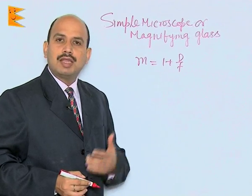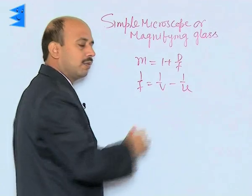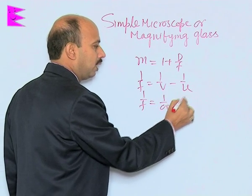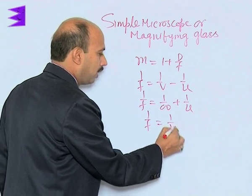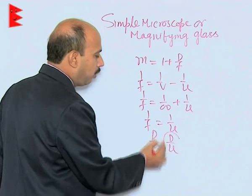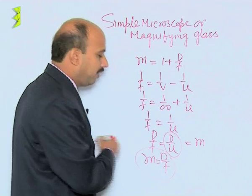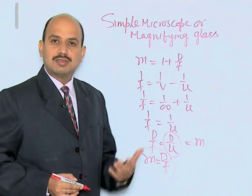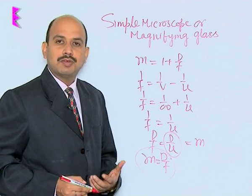We can also calculate when the final image is at infinity. Using the lens formula 1/f = 1/v - 1/u, with the final image at infinity: 1/f = 1/infinity + 1/u. Using sign convention with u negative: 1/f = 1/u, so multiplying by D on both sides, D/f = D/u, and since D/u = m, we get m = D/f when the final image is at infinity. When the final image is at the least distance of distinct vision, the magnifying power is larger than this. This is the magnifying power of a simple microscope. Thank you.